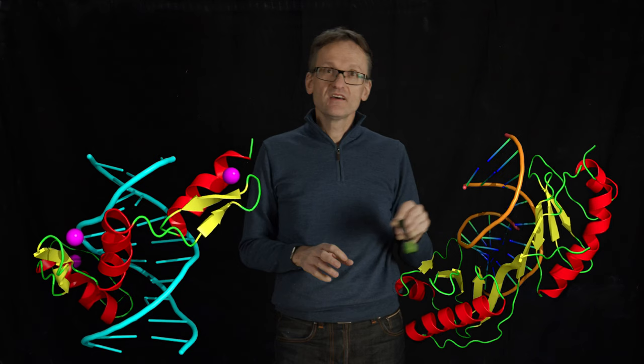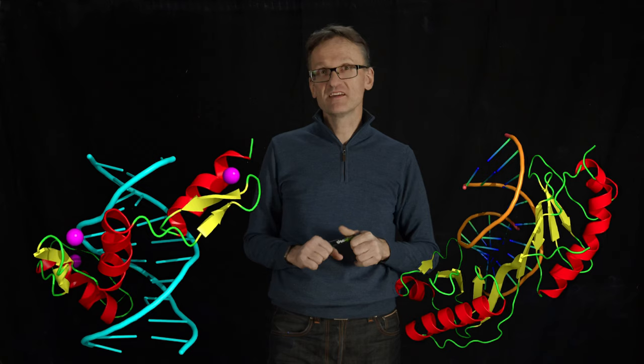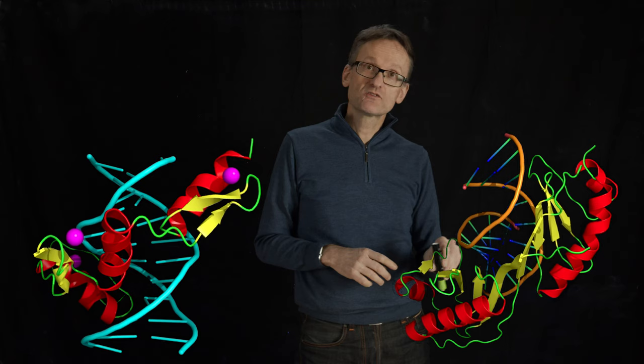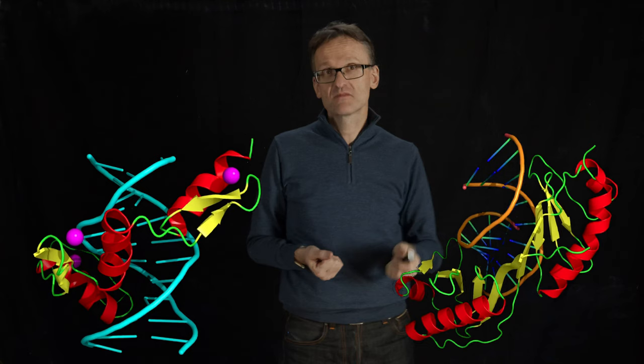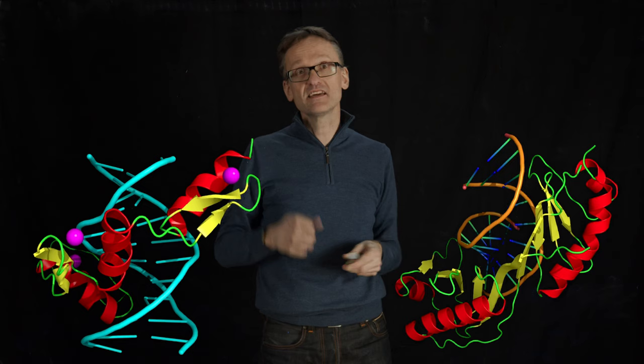This other protein is called a TATA binding protein. It has nothing to do with the Indian consulting company Tata. Do you see again that it's naturally twisting? That had to do with the propensity of beta sheets to twist. This twist has also evolved to fit perfectly in the major groove of DNA.